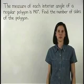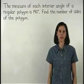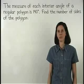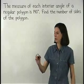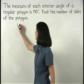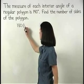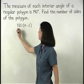Remember that the measure of each interior angle of a regular polygon can be represented by the formula 180 times n minus 2 over n.